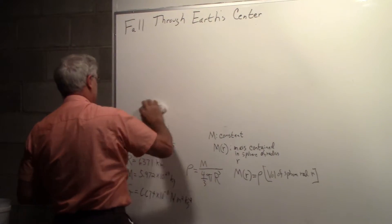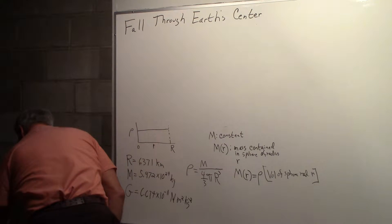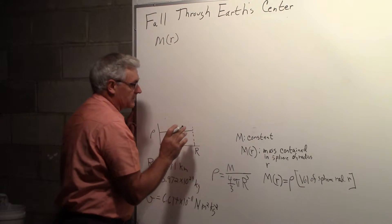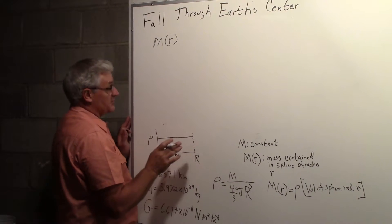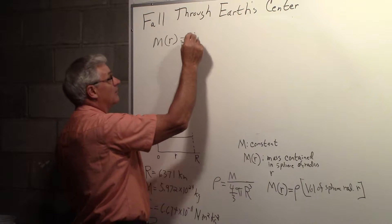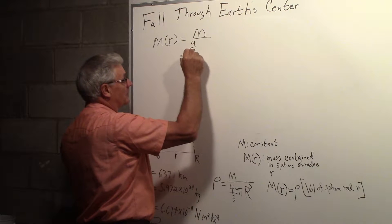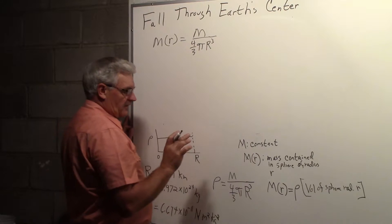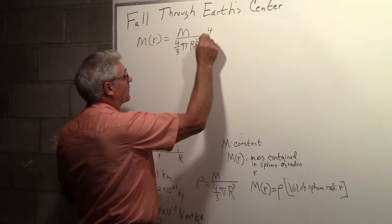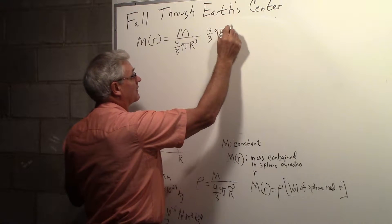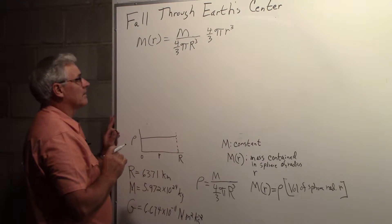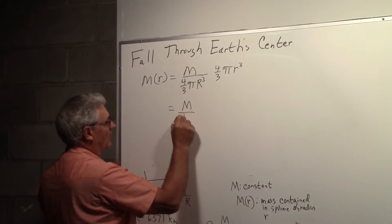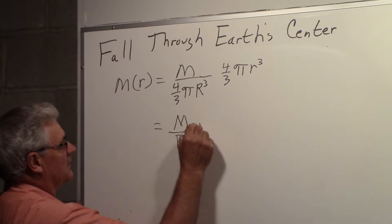We need to find M(r). The density of the Earth ρ = M / (4/3)πR³. And the volume of the sphere of radius r is (4/3)πr³. So multiplying these together, we get M(r) = M · r³ / R³. You can see the units work out.